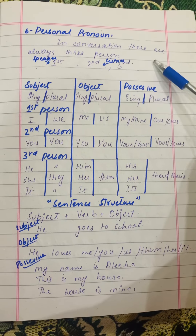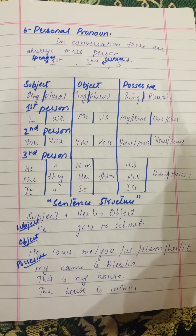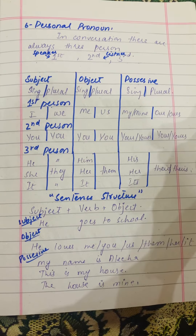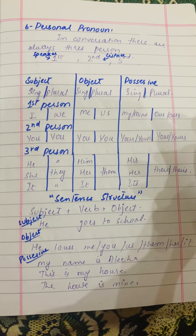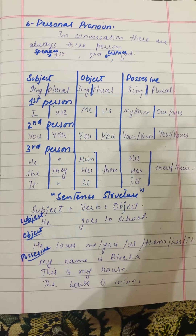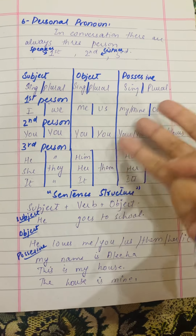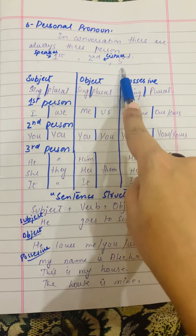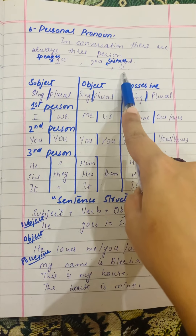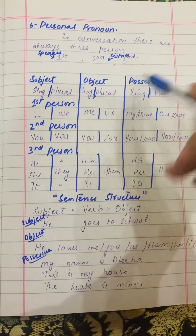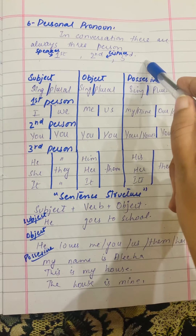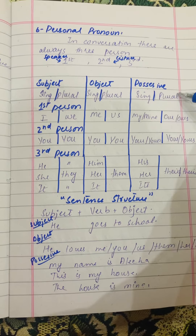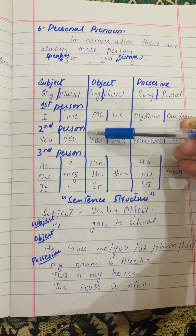Number six, last but not least and the most important — personal pronouns. In a conversation there are three main people: number one is the speaker, number two is the listener, and number three is the person being talked about. Personal pronouns come in subject, object, and possessive forms, and they are used in singular and plural, across first person, second person, and third person.